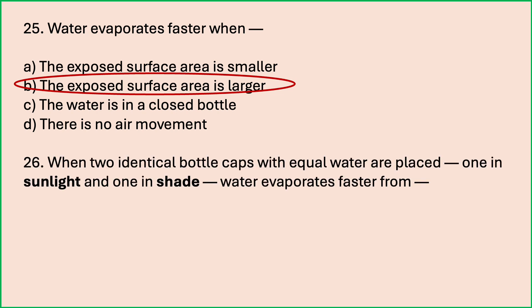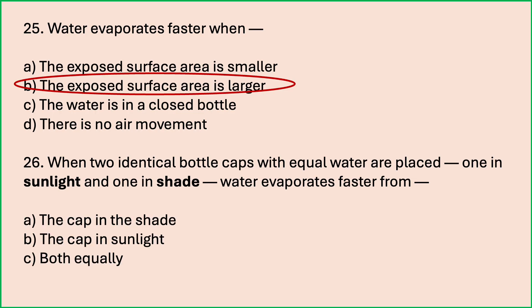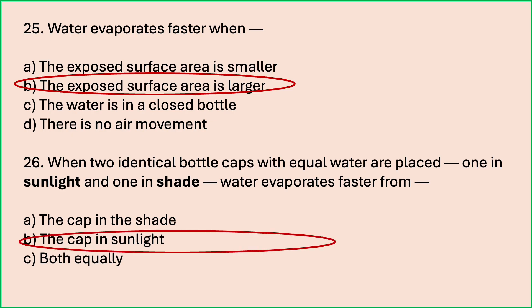When two identical bottle caps with equal water are placed — one in sunlight and one in shade — water evaporates faster from? Options are: the cap in the shade; the cap in sunlight; both equally. Which is the correct answer? The cap in sunlight. Water evaporates faster from the cap kept in sunlight compared to the cap kept in shade.